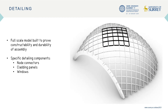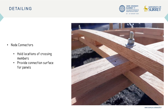A full-scale model was built of a portion of the grid shell, shown in black, to test and prove constructability and durability of cladding components. Some of the specific detail components designed for this project were node connectors, cladding panels, and windows. Grid shell nodes hold the crossing locations of the timber lats and clamp the assembly into a fixed connection. We used a simpler type of node with a pin through the center of the lath crossing. This also allowed us to add connector disks for the panels, as you will see on the next slide.